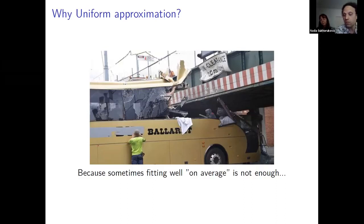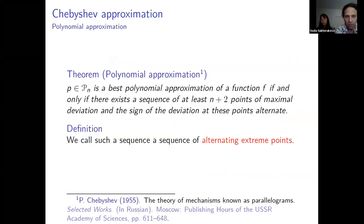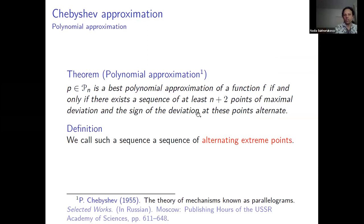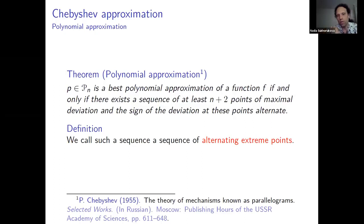Even today, algorithms like the Remez algorithm for calculating the best polynomial approximation are very much in use in computer science. The theorem states: for a polynomial to be a best polynomial approximation of a function f, we need at least n+2 points of maximum deviation where the deviations alternate. For linear approximation (n=1) we have three such points — we call this an alternating extremal point sequence.